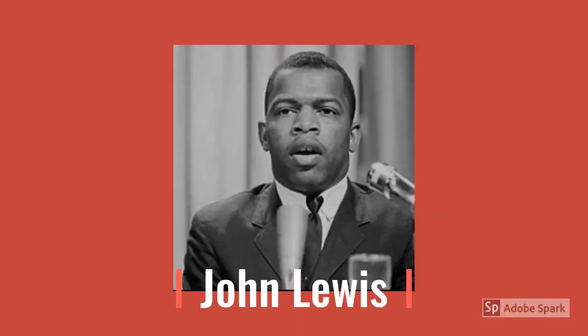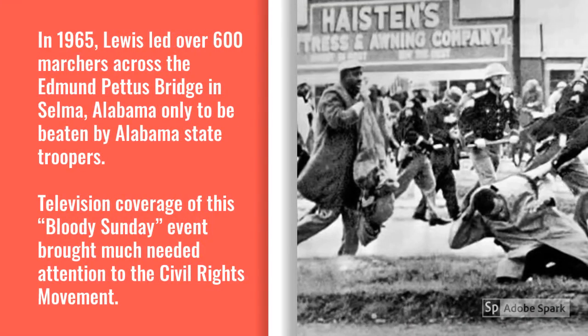John Lewis was born to sharecroppers in Pike County, Alabama. Like King, Lewis became an integral part of Georgia's history through his leadership in the civil rights movement. He was active in the 1960s sit-ins to protest Jim Crow laws, participated in the Freedom Rides of the early 1960s, became the chair of the Student Nonviolent Coordinating Committee, SNCC, and was a keynote speaker at the 1963 March on Washington for Jobs and Freedom. In 1965, Lewis led over 600 marchers across the Edmund Pettus Bridge in Selma, Alabama, only to be beaten by Alabama state troopers.